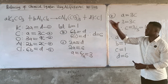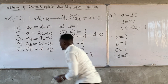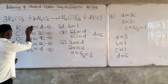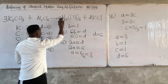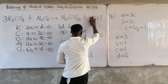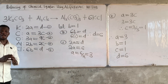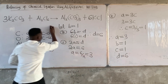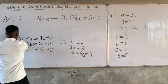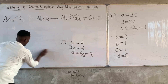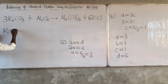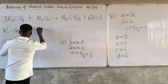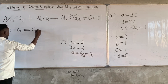Let's substitute all of these values back into the equation. Wherever I see A, I put 3. Wherever I see B, I put 1 (but I won't write the 1). Wherever I see C, I put 1. Wherever I see D, I put 6. Now let's check: potassium — 2 times 3 is 6 on the left-hand side, and 6 on the right-hand side. Potassium is balanced.